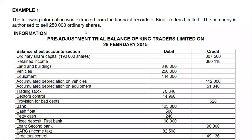The pre-adjustment trial balance of King Traders Limited is dated 28 February 2015, meaning our financial year ends on that date. Our financial year started on 1 March 2014 and ran to 28 February 2015. They gave us ordinary share capital of 190,000 shares. Every amount in the pre-adjustment trial balance will be a frozen value — a balance at the end of the financial year, unless the adjustments tell you otherwise.